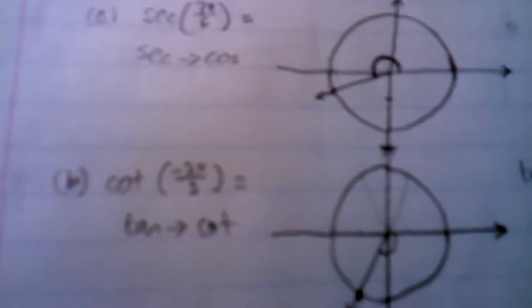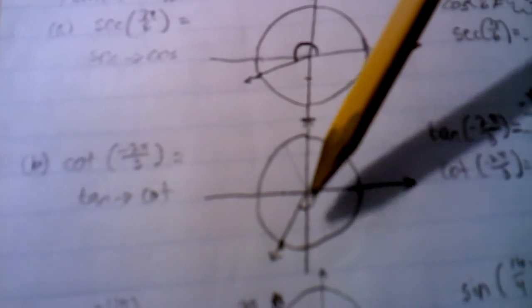Next we have cotangent of -2π/3, and notice that it's a negative angle. So we're going to be going down instead of up.